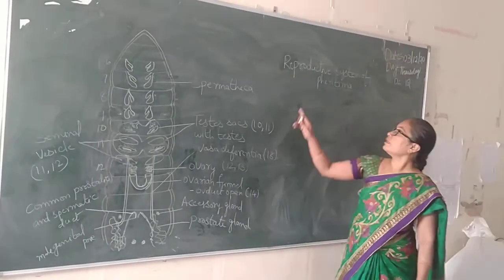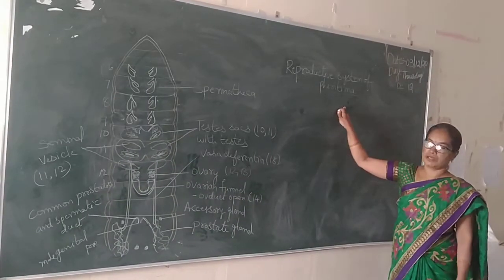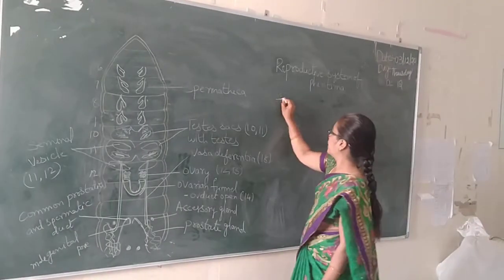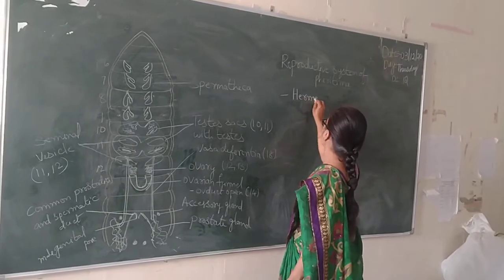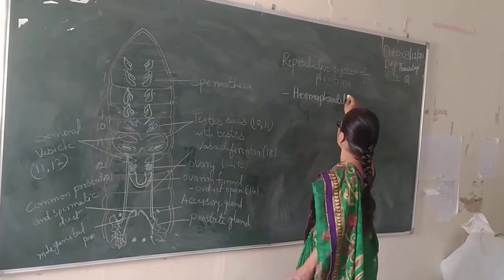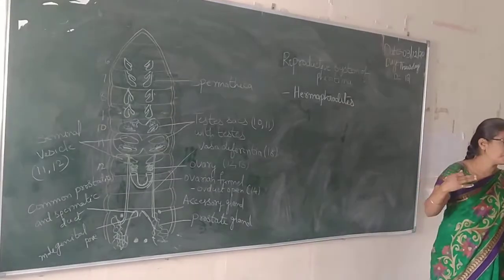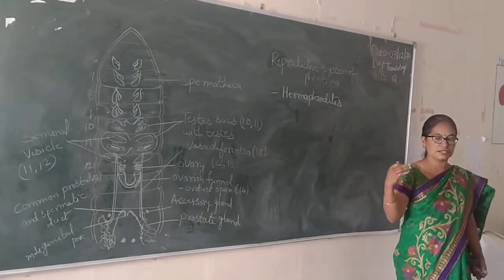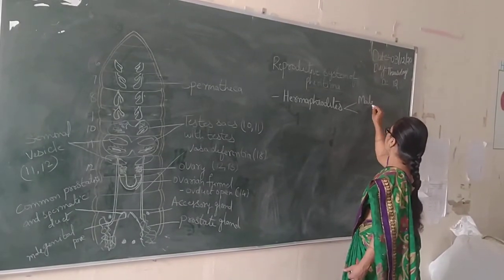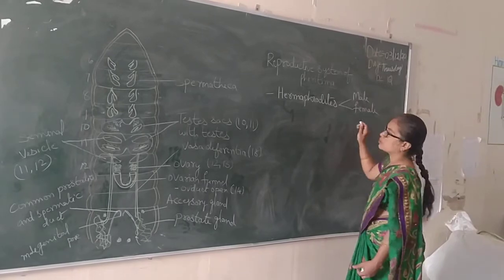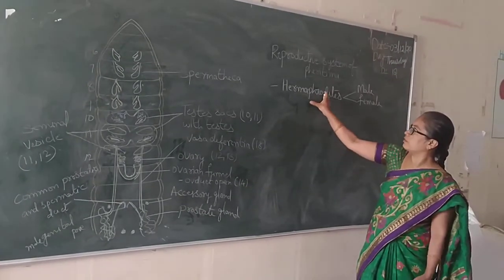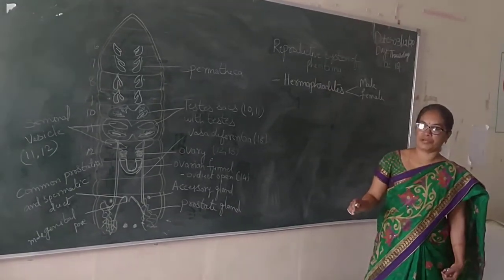Today we discuss the topic: Reproductive System of Ferritima. These Ferritima are hermaphrodites. Hermaphrodites means both male and female sexual organs are present in the same organism, so they are called as hermaphrodites.